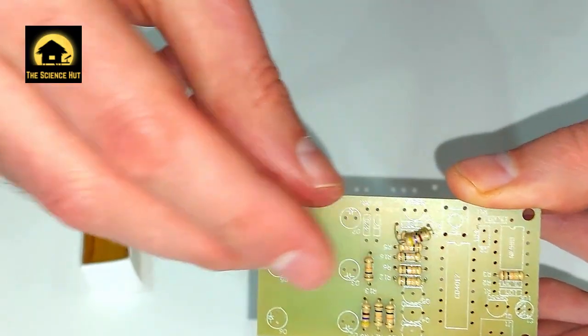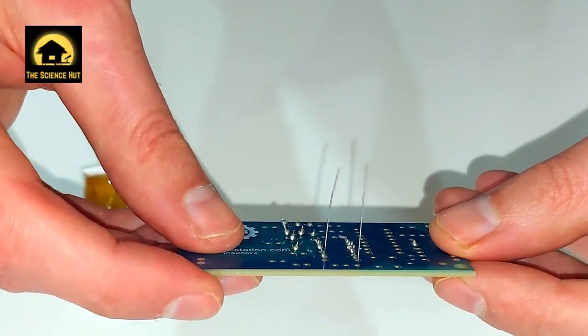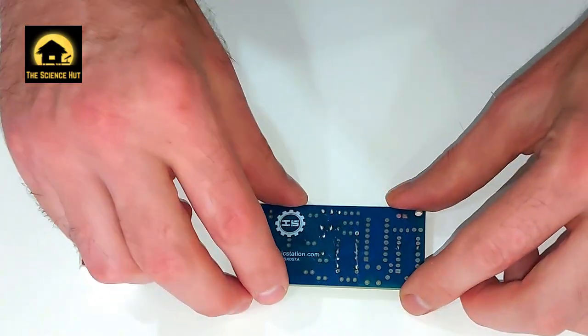To install the components, push the pins through the relevant holes on the PCB. The body of the component typically goes on the silkscreen side of the board.